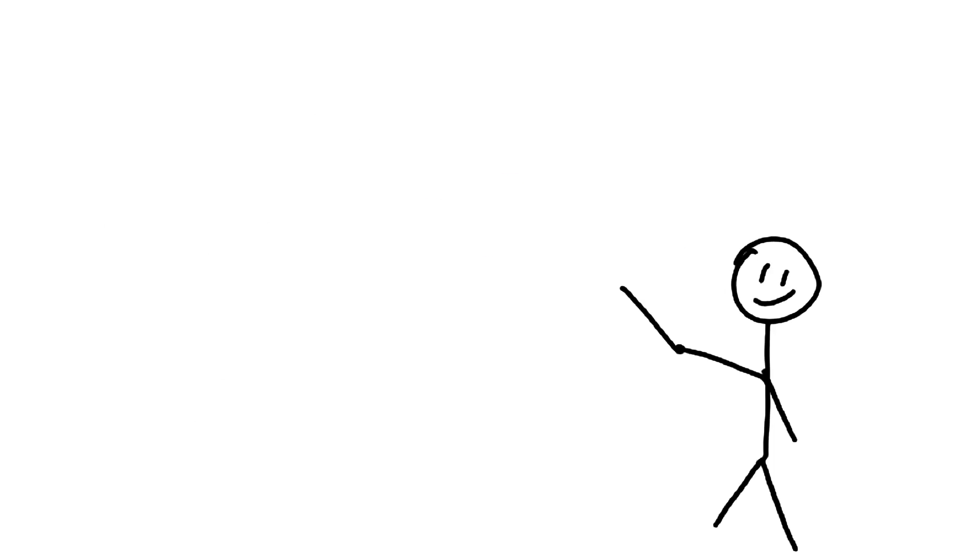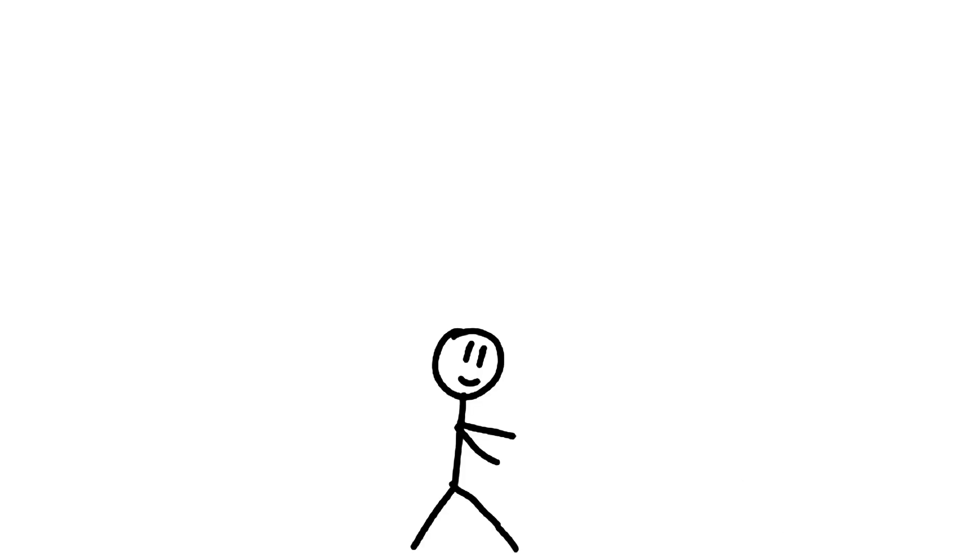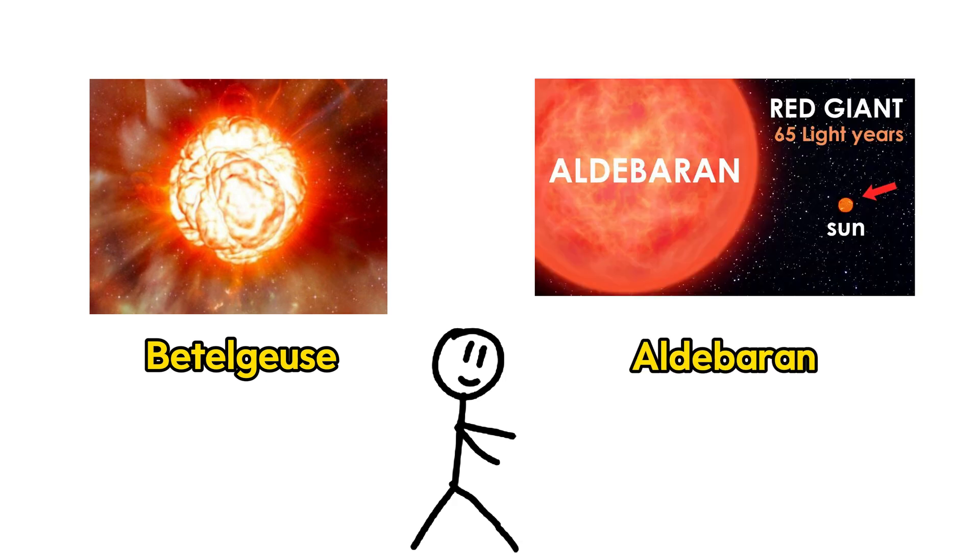In this stage, helium starts to fuse in the core, creating heavier elements like carbon and oxygen. Famous red giants include Betelgeuse in the constellation Orion and Aldebaran in Taurus.